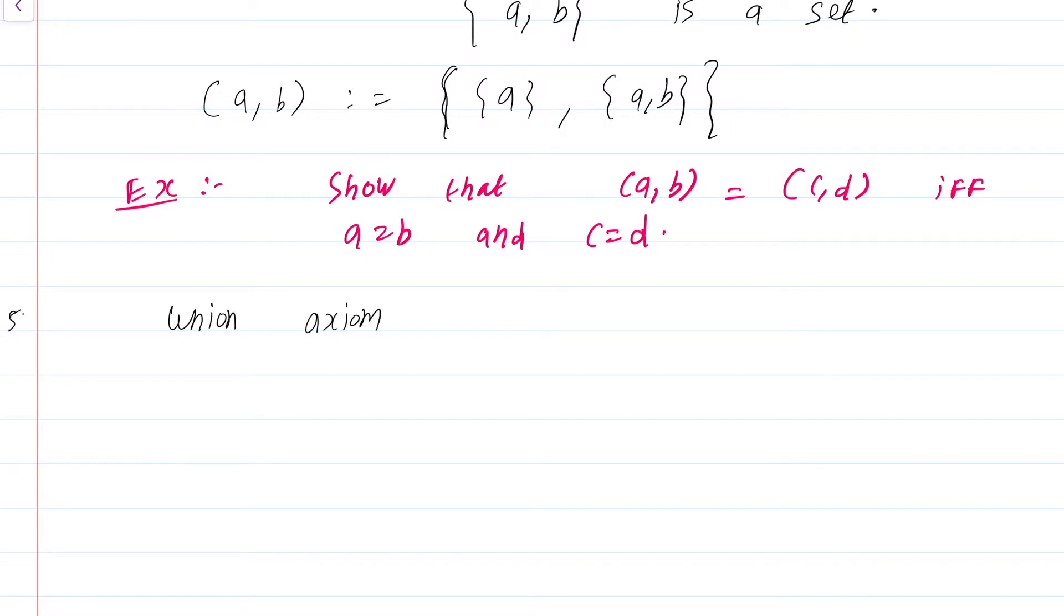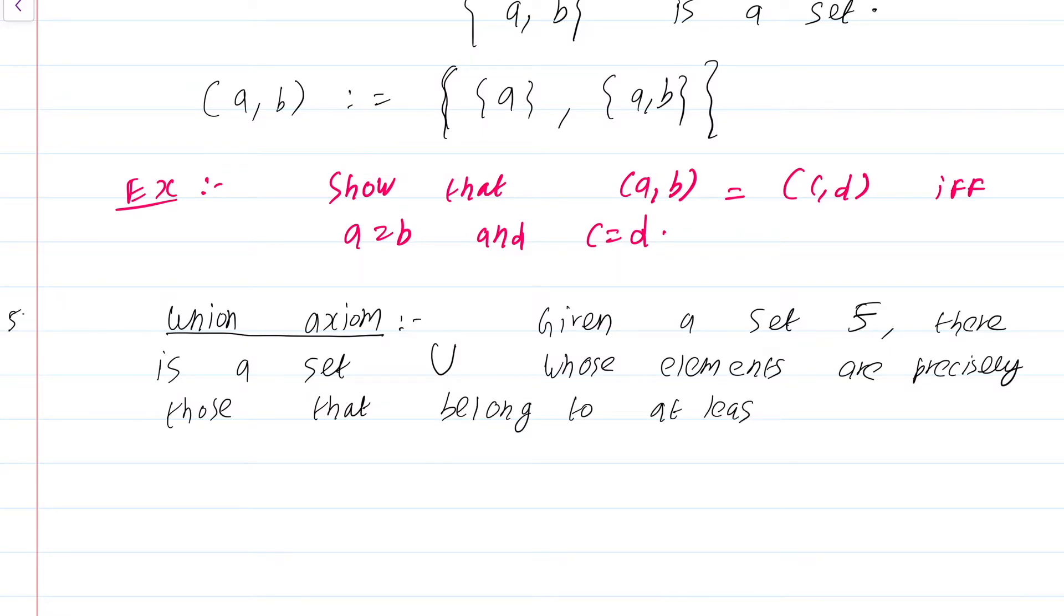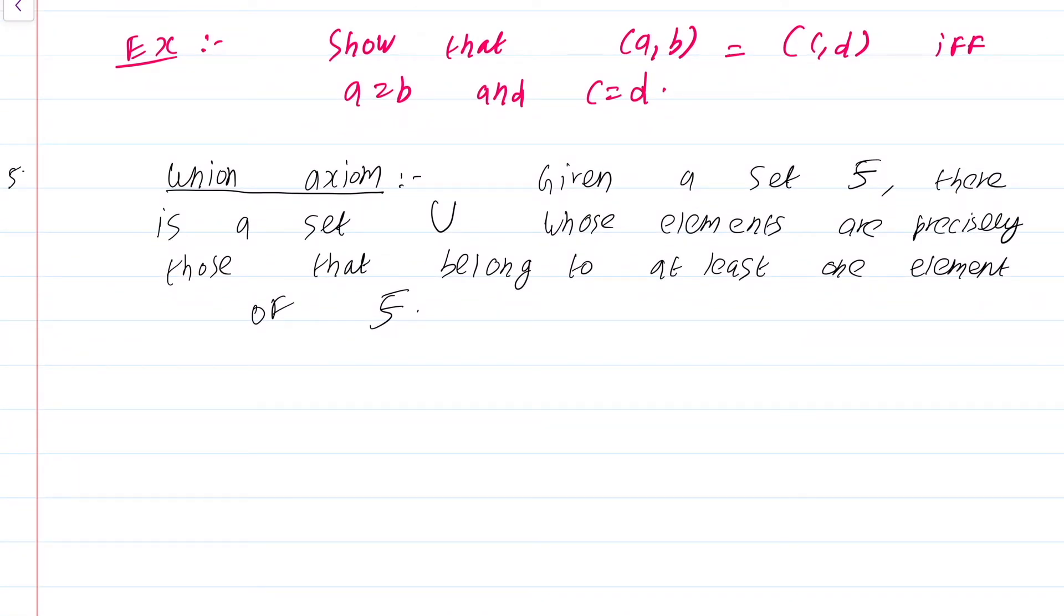The fifth axiom is fairly straightforward, it is the union axiom. It will be stated in a really weird way because everything for us is a set. It says the following. Given a set f, there is a set capital U whose elements are precisely those that belong to at least one element of f.